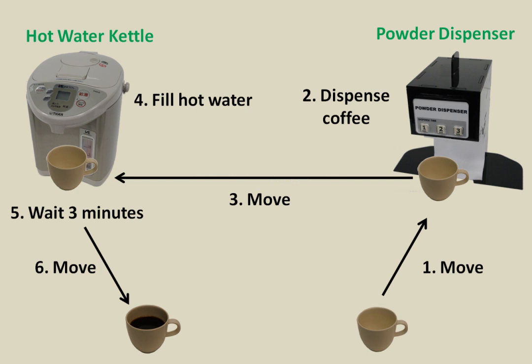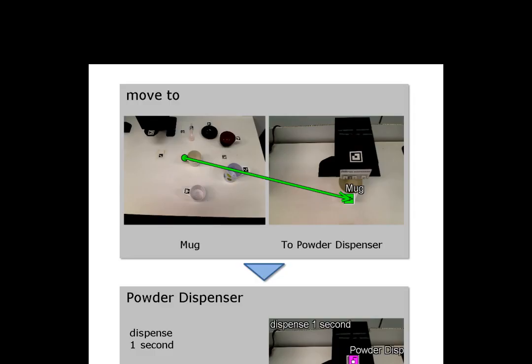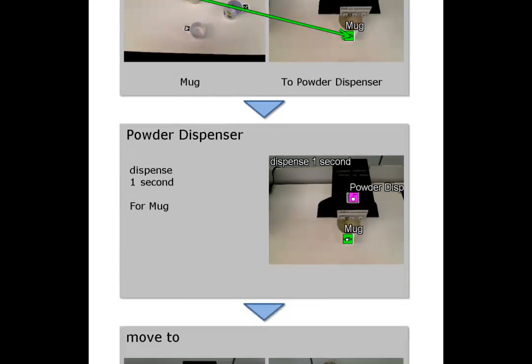In this example, we trained the robot to prepare a cup of coffee using a coffee powder dispenser and hot water kettle. These annotated photographs are produced from the handheld device.